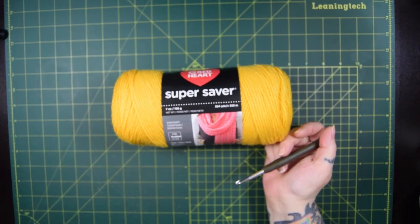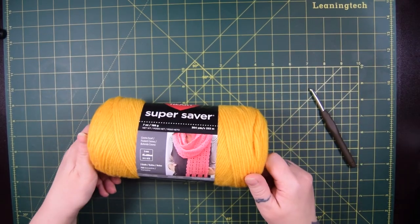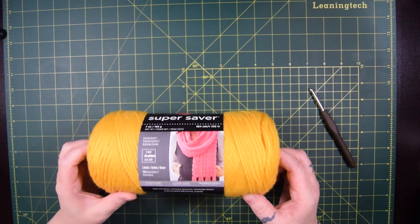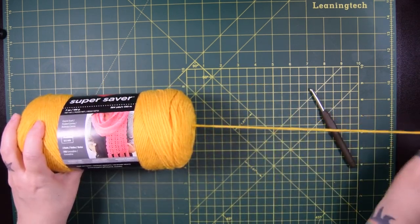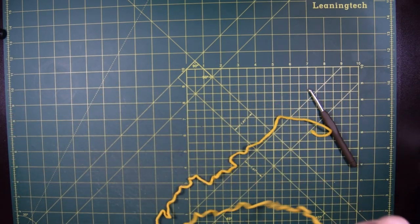So the yarn calls for a 5mm hook, and I'm using a 5.5mm hook. This is just total preference. I don't want a tight scarf. You can use the size that the yarn calls for, and that would be fine as well.